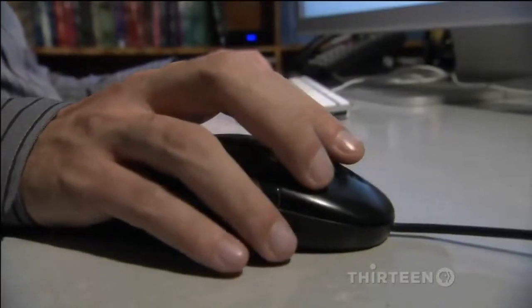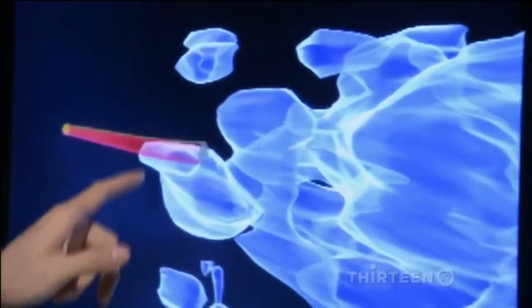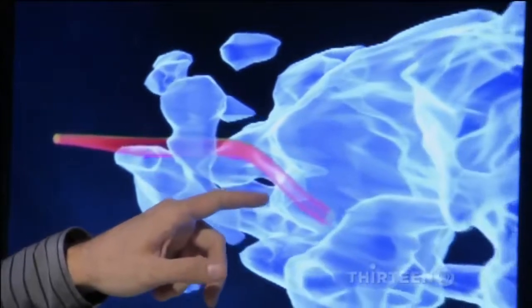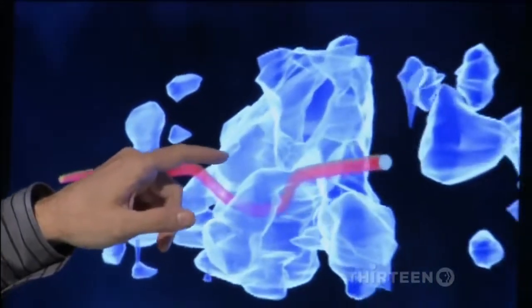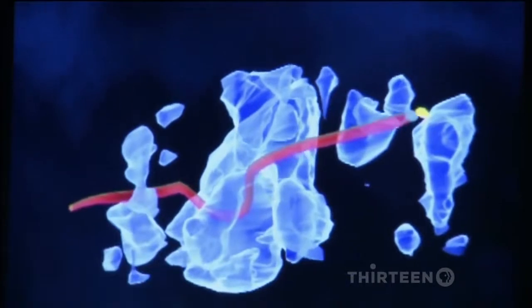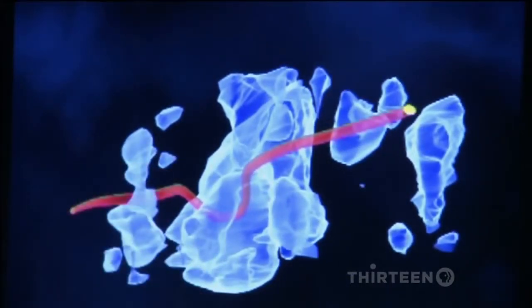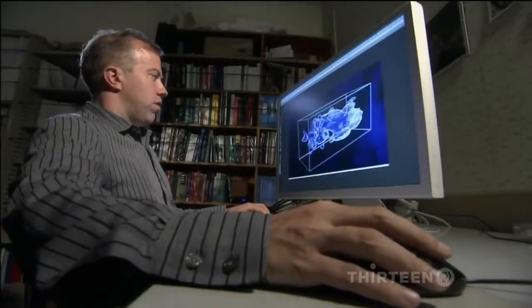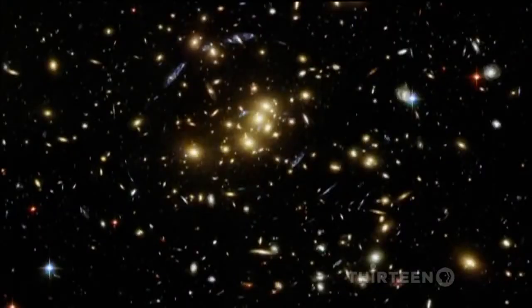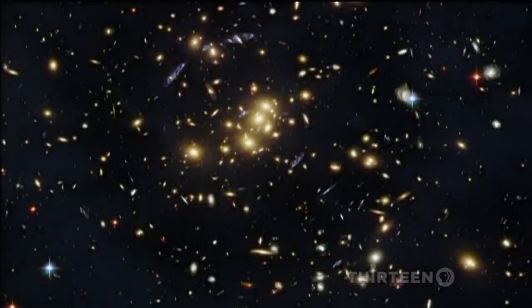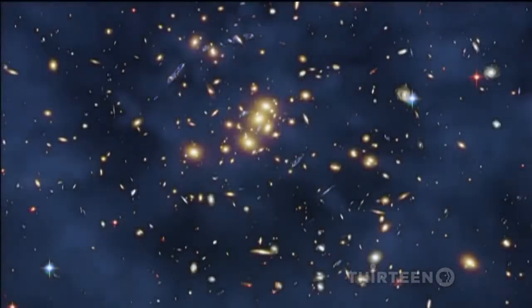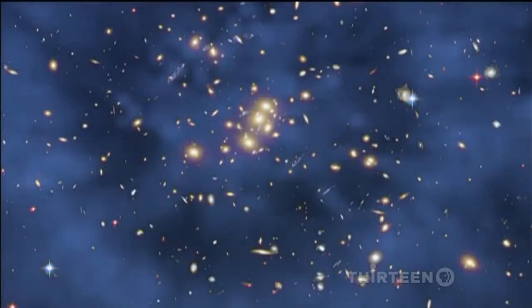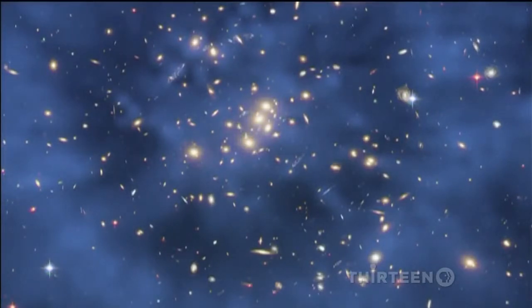It exerts a powerful gravitational pull on light from distant galaxies. So what we're looking at here is light from a distant galaxy coming to us through this dark matter distribution. And as the light goes through the dark matter distribution, the path of the light is bent. Astronomers calculate that dark matter makes up 23% of the universe. Add that to dark energy, and that leaves just 5% of the entire universe that is not invisible.